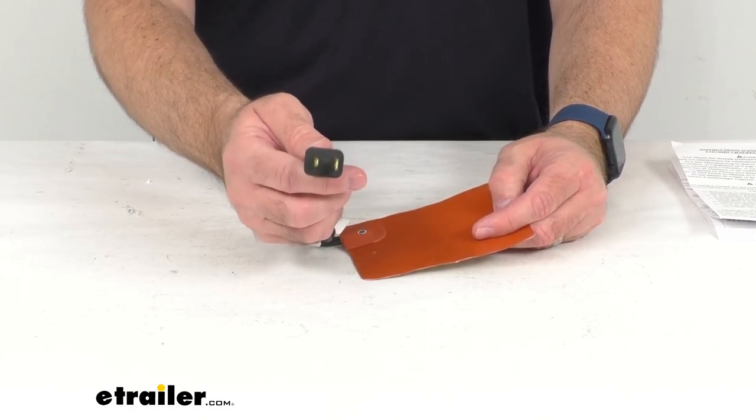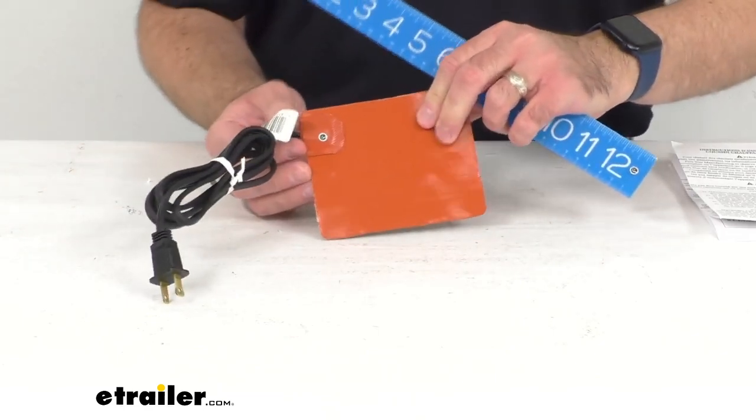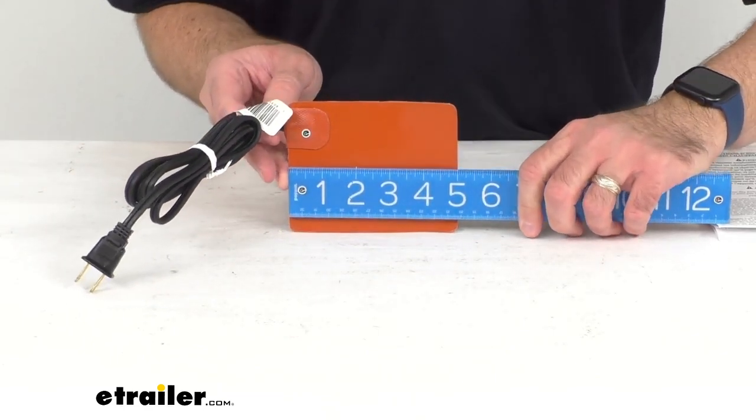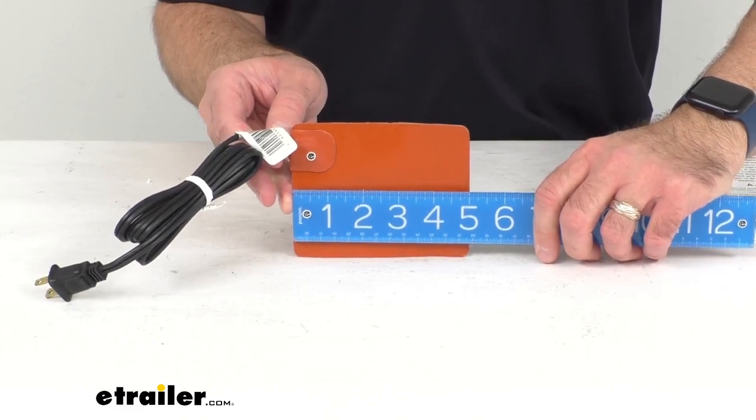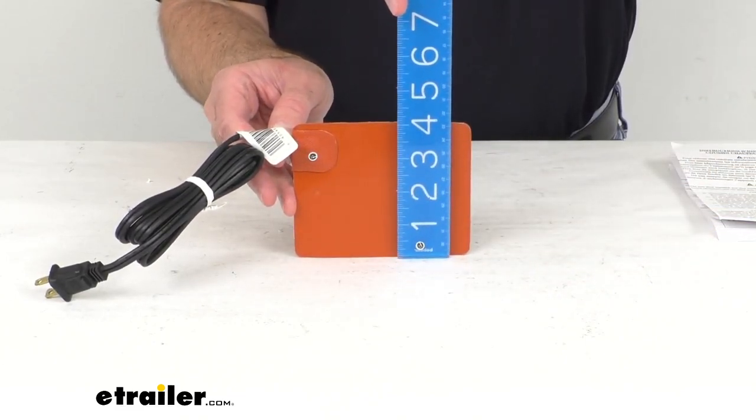This has a wattage of 100 watts. Let me pull out my ruler here real quick to give you the idea of the size of this pad. Looking at the overall length we are sitting right at 5 inches long and the overall width we are sitting right at 4 inches wide.